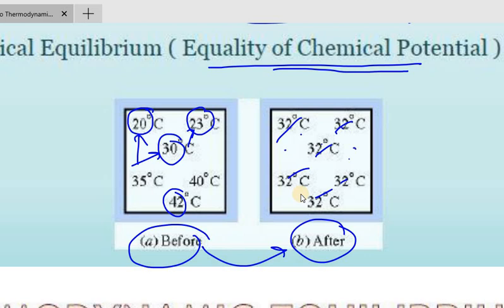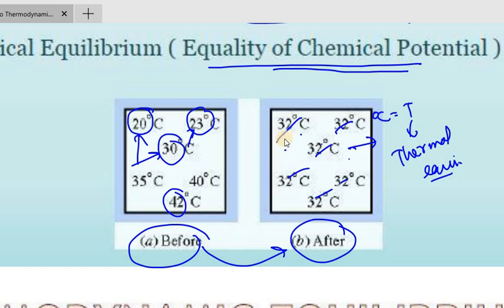That means the temperature at every point of this system is equal — and that is thermal equilibrium. If the temperature is equal throughout, for example at the same degree centigrade, that means it is thermal equilibrium.